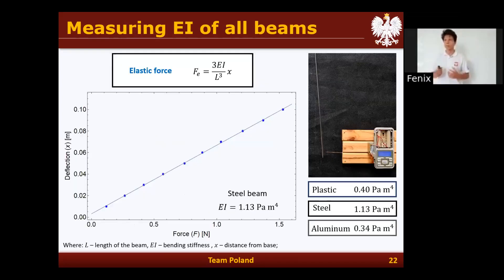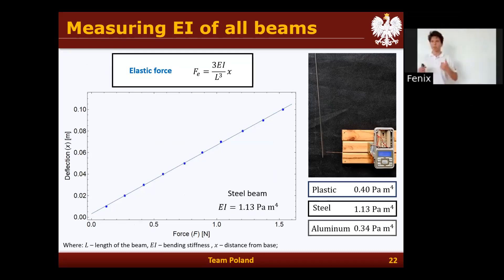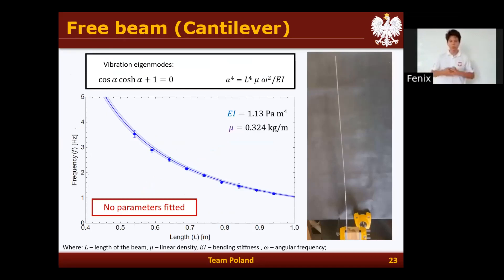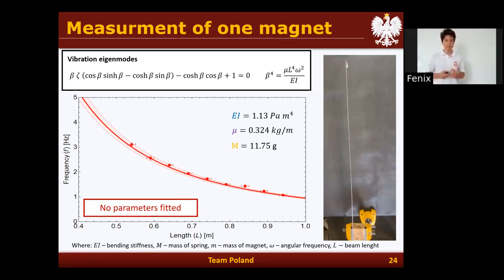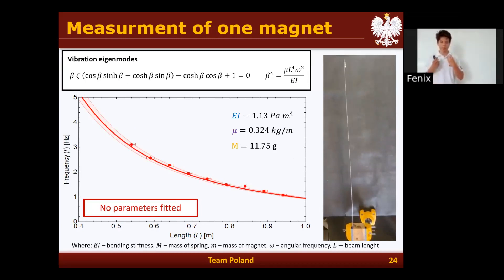To predict all these frequencies, we need to find the bending stiffness, which we do by measuring the force exerted by the rod for different deflections. We found the bending stiffness for all the beams we use. We then use the bending stiffness to compare our theoretical predictions with the actual frequencies of our cantilever — we can predict them very well. The same holds when we add mass to the end; we can accurately predict the frequencies of oscillation.